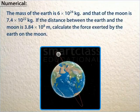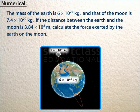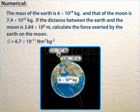Numerical: The mass of the Earth is 6 × 10²⁴ kilograms and that of the Moon is 7.4 × 10²² kilograms. If the distance between the Earth and the Moon is 3.84 × 10⁸ meters, calculate the force exerted by the Earth on the Moon. G is equal to 6.7 × 10⁻¹¹ Newton meter square per kilogram square.